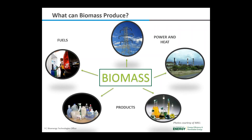Today, petroleum is refined to make chemical feedstocks used in thousands of products. Many of these petroleum-based feedstocks could be replaced with value-added chemicals produced from biomass to manufacture clothing, plastics, lubricants, and other products. The emerging U.S. bio-based products industry combines expertise and technology from agriculture, forest products, and chemical industries to create plastics, chemicals, and composite materials from renewable resources, including agricultural crops and residues, trees and forest residues, grasses, animal waste, and municipal solid waste.